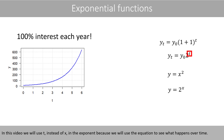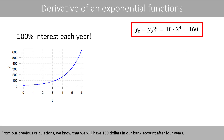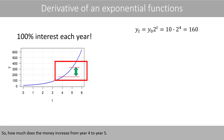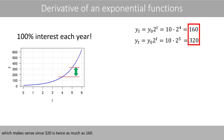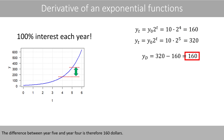This is an exponential function because we have X in the exponent. In this video, we will use T instead of X in the exponent because we will use the equation to see what happens over time. From our previous calculations, we know that we will have $160 in our bank account after four years. So how much is the increase from year 4 to 5? By using the formula, we know that we have $320 after five years, which makes sense since $320 is twice as much as $160. The difference between year 5 and year 4 is therefore $160.